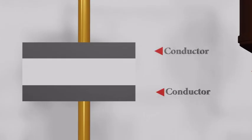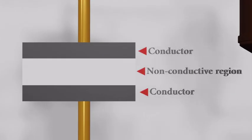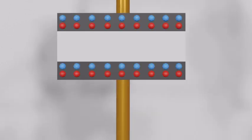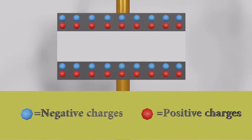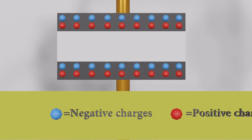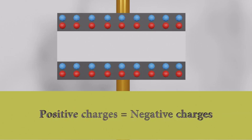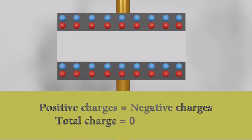Let's replace the capacitor with its symbol for ease of understanding. A capacitor consists of two conductors separated by a non-conductive region. In this non-charged capacitor, red dots represent positive charges and blue dots represent negative charges. Since it is non-charged, the number of positive charges equals the number of negative charges in each conductor plate, meaning the net charge is zero for each plate and the electron pressure is zero for both.